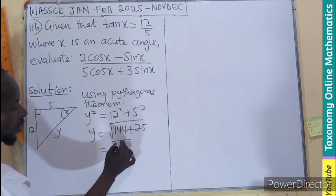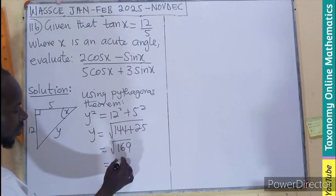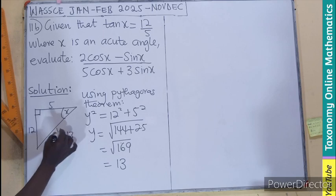That means the root of 169. And that would be 13, meaning here it is going to be 13.